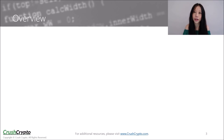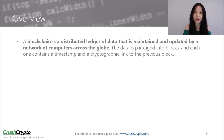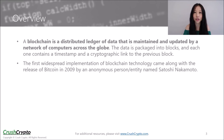In short, a blockchain is a distributed ledger of data that is maintained and updated by a network of computers across the globe. The data is packaged into blocks and each one contains a timestamp and a cryptographic link to the previous block. The first widespread implementation of blockchain technology came along with the release of Bitcoin in 2009 by an anonymous person or entity named Satoshi Nakamoto.